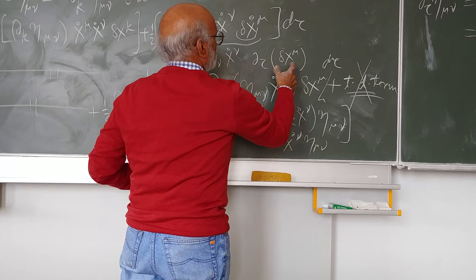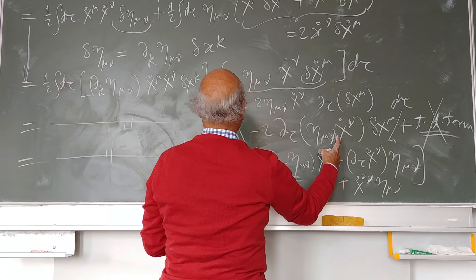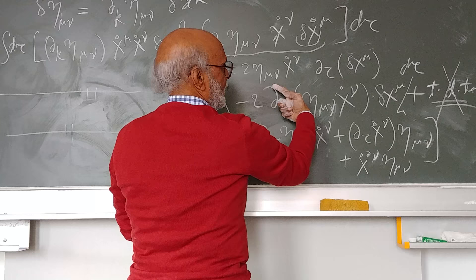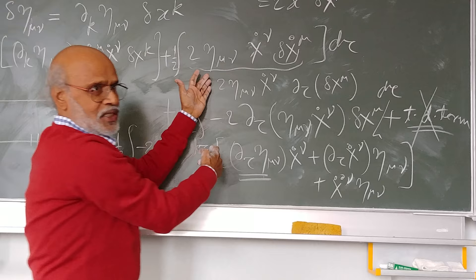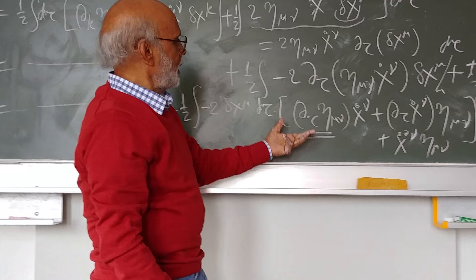Then we took one partial integration to shift this time derivative on to this time derivative of this with a minus sign plus a total derivative. And then we have differentiated the product of these two.